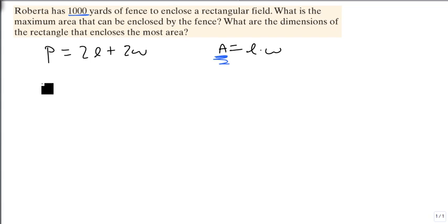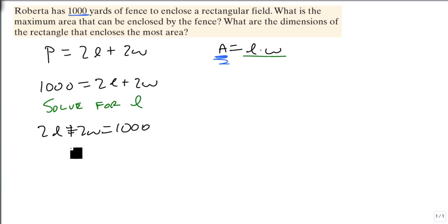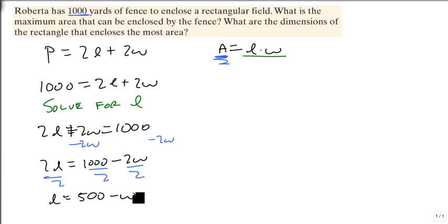Well, let's take our 1,000 equals 2L plus 2W, and we're going to arbitrarily solve for L. And the reason we're doing this is that we can substitute it in over here. So 2L plus 2W equals 1,000. We just swap sides. We subtract 2W from both sides. We get 2L equals 1,000 minus 2W. Divide everything by 2. And L equals 500 minus W.